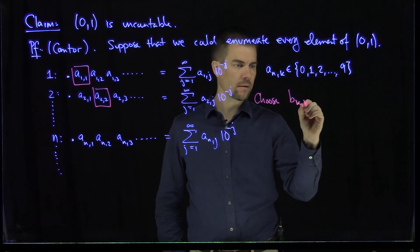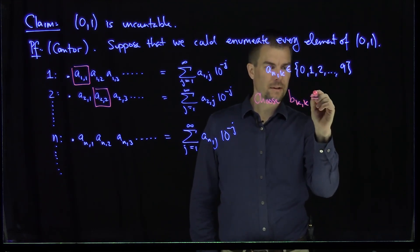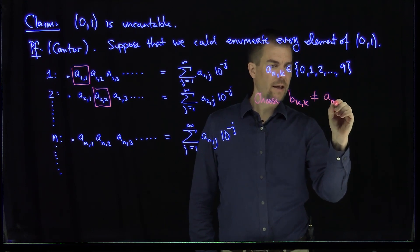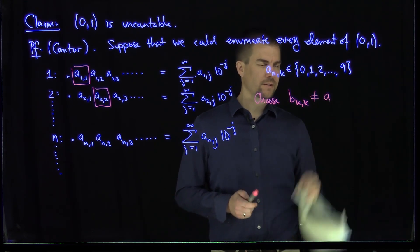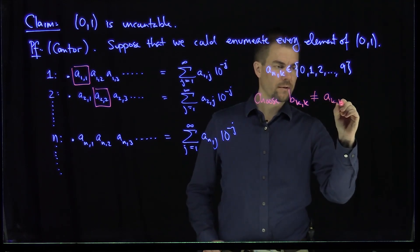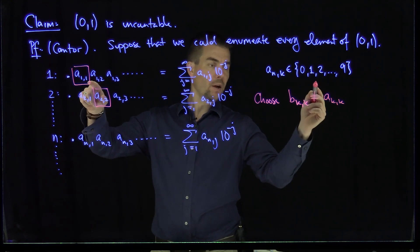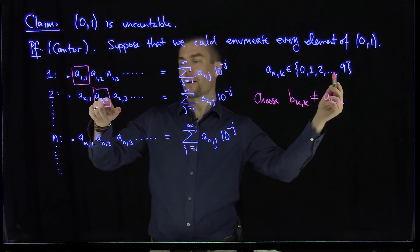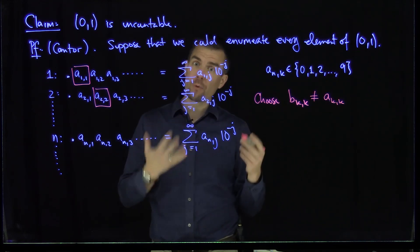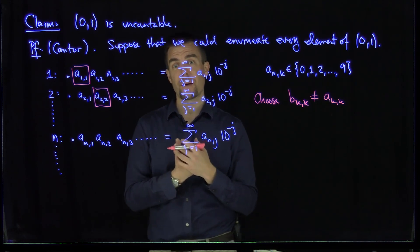1 through 9, that's different, not equal to a_k_k. In other words, we choose something different. For example, if a11 was 2, I could choose b11 to be 3. If a22 was 9, I could choose b22 to be 8. It's always possible to choose something different since there are 10 elements in the set.